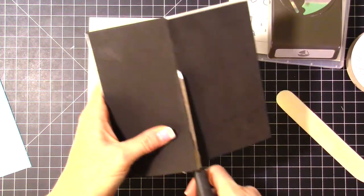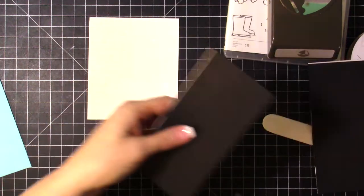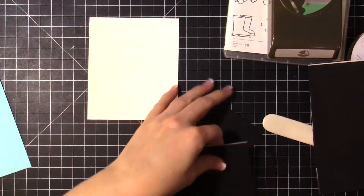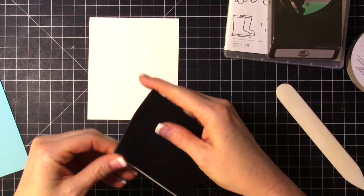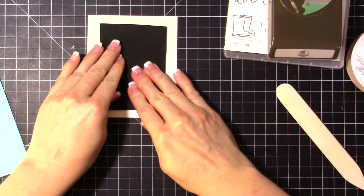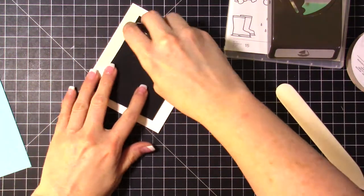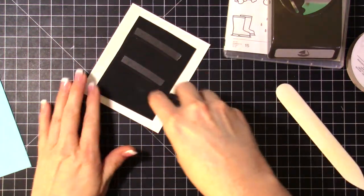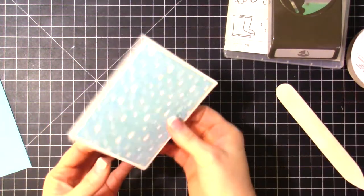It coordinates with the Under My Umbrella punch and with our heart punches. It's really cute. I've taken the raindrop side and attached it to Whisper White cardstock, and then I've put some fun foam on here. I will add this part to the card.